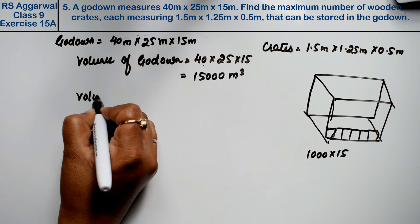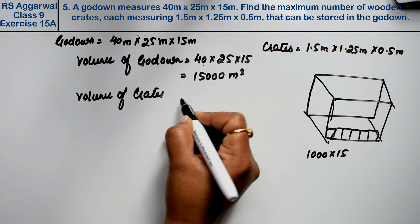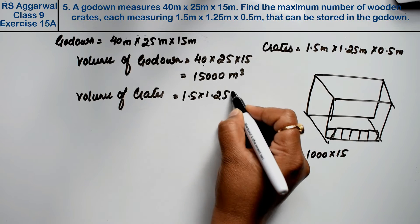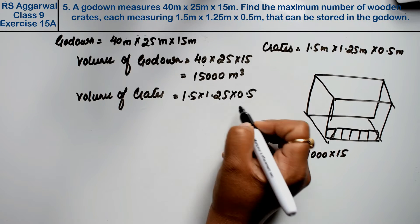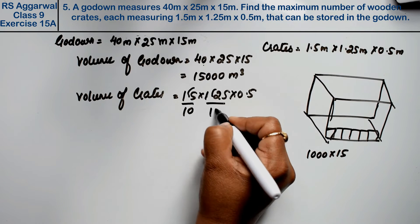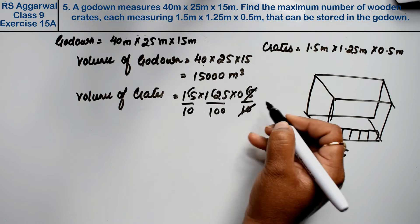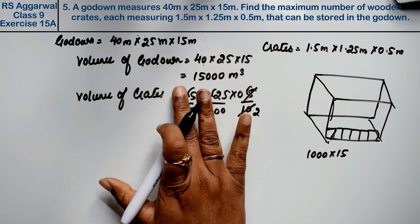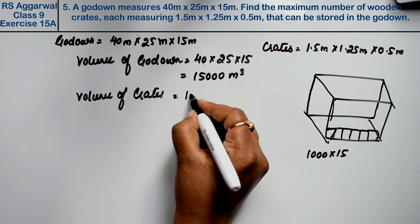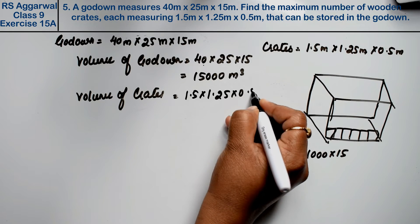Volume of crate: 1.5 × 1.25 × 0.5. If there are decimal points, I could remove them, but since it will result in decimals anyway, we'll multiply directly. 1.5 × 1.25 × 0.5, how much is it?